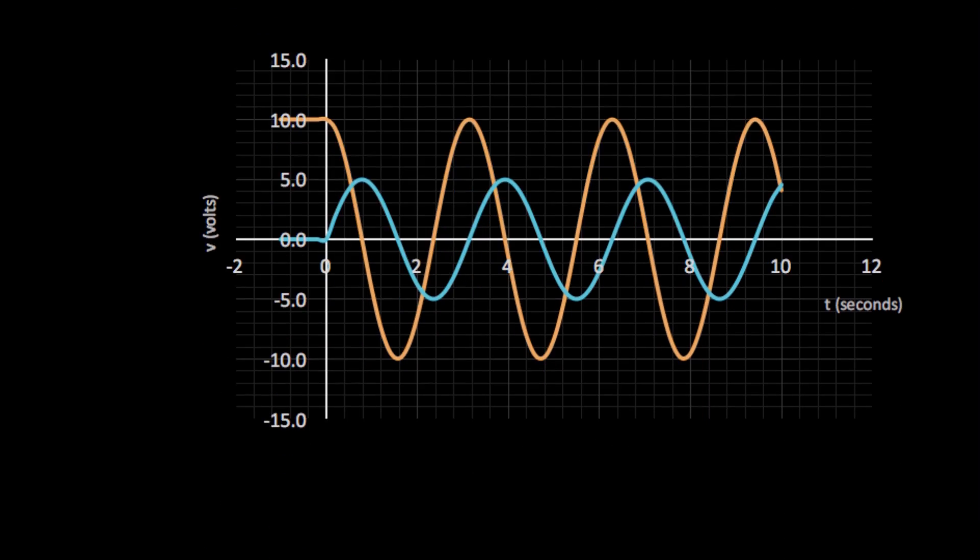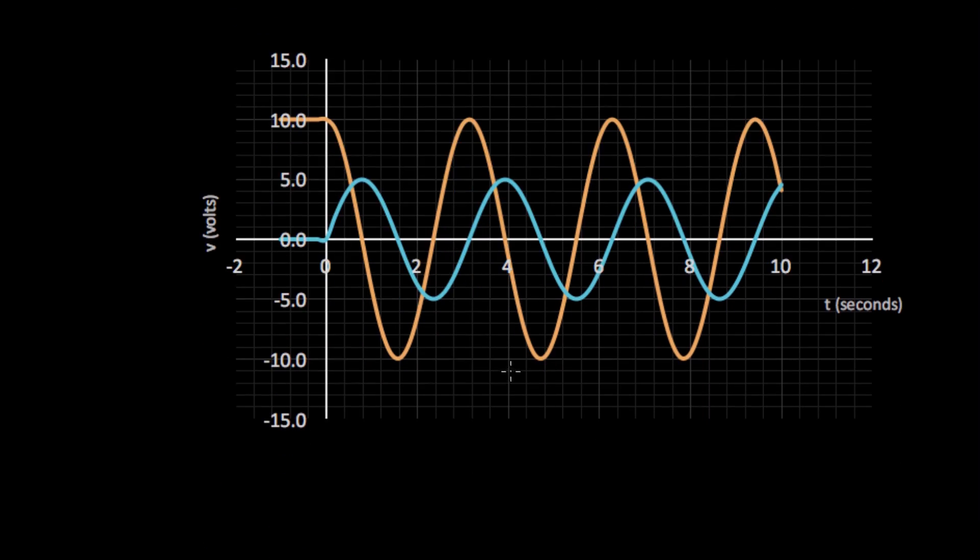Now let me show you what it looks like when we plot both I and V on the same graph, and we can see the timing relationship between them. So this is a plot of I of T in blue, and V of T in orange. One of them is a sine wave. The current is a sine wave, and the voltage is a cosine wave.